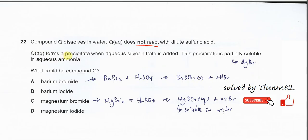Q forms a precipitate with aqueous silver nitrate. This precipitate is partially soluble in aqueous ammonia. So this is a very important info because this one is telling us that it's a silver bromide. Means in the compound Q it has the bromide in there.